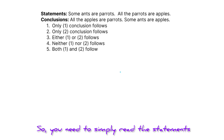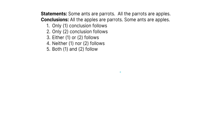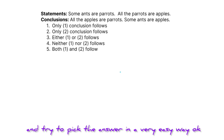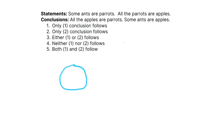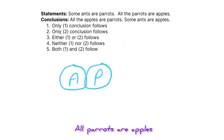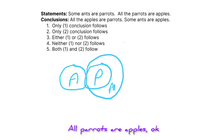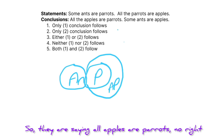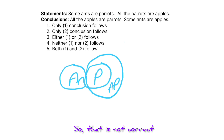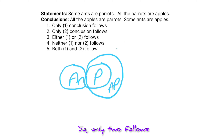You simply need to read the statements, draw the Venn diagram, and tackle the conclusions. The next question: some ants are parrots, and all parrots are apples. The conclusions are: all apples are parrots — no, only some apples are parrots, so that is not correct. Some ants are apples — yes, that is correct. So only two follows.